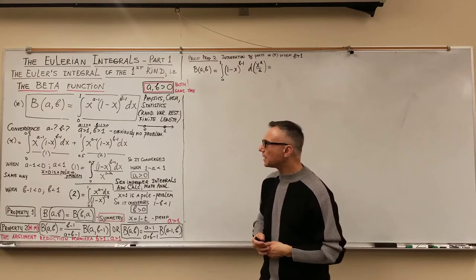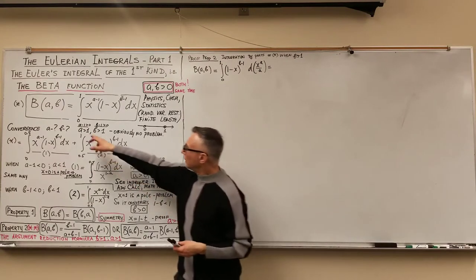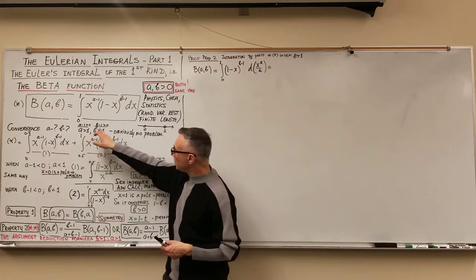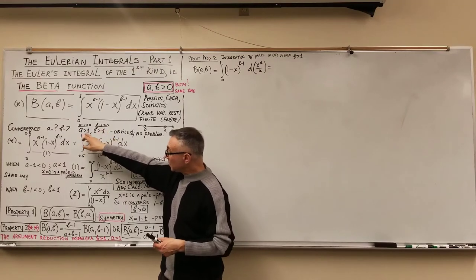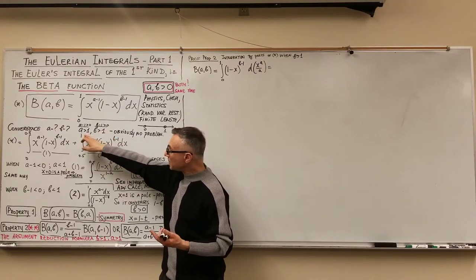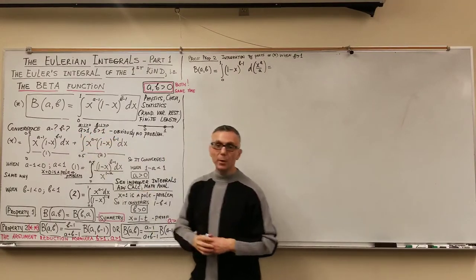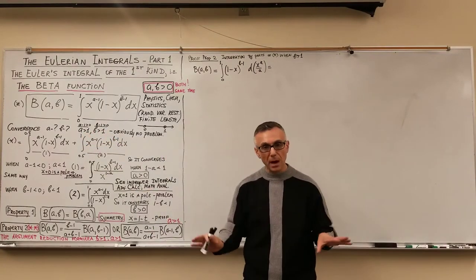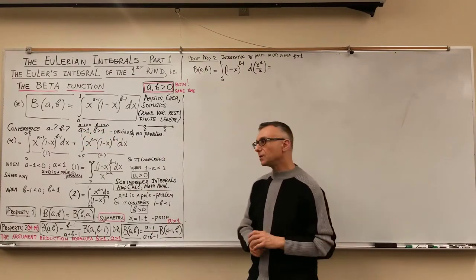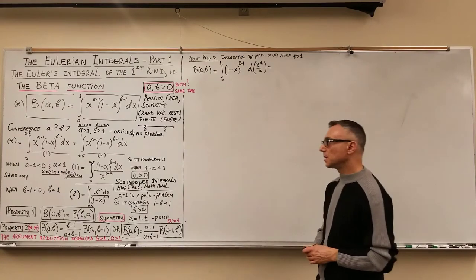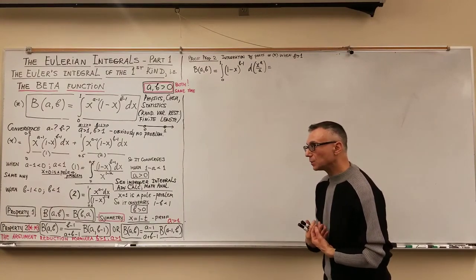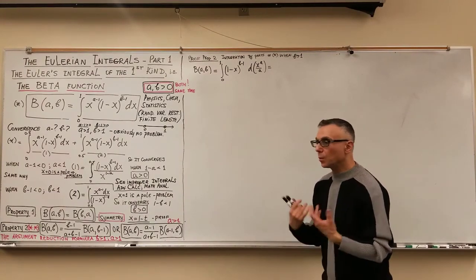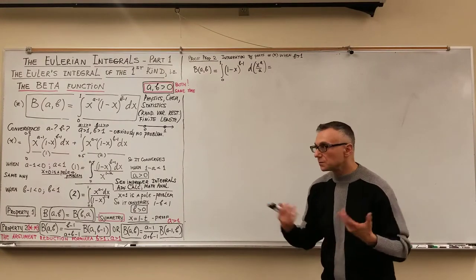Another case: when a minus 1 equals 0, meaning a is 1, and b is 1, there's also no problem — the integral converges. What about other values of a and b less than 1? Let's research that.